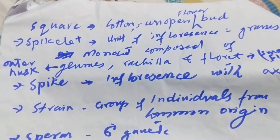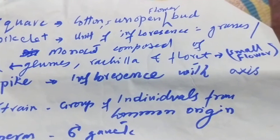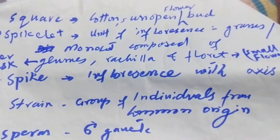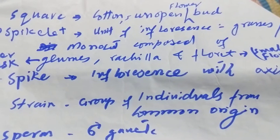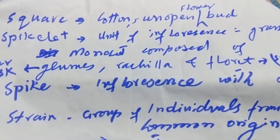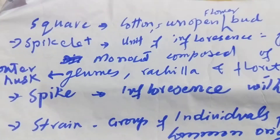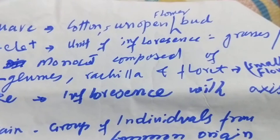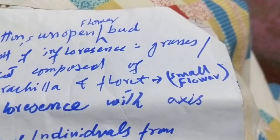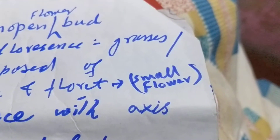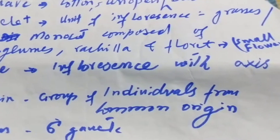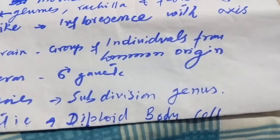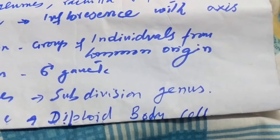Square is a cut unopened flower bud. Spikelet is the unit of inflorescence in grasses or monocots, composed of glumes (outer husk), rachilla, and floret (small flower). Spike is an inflorescence with an axis.